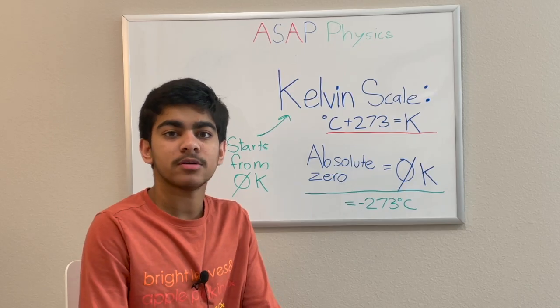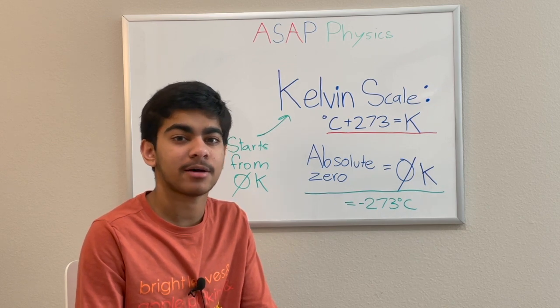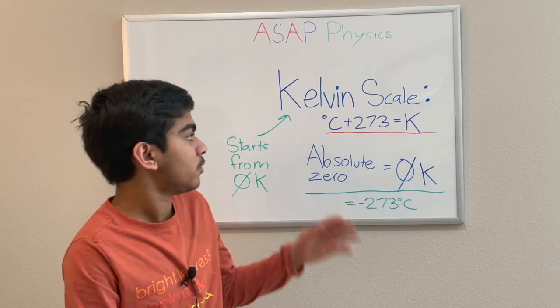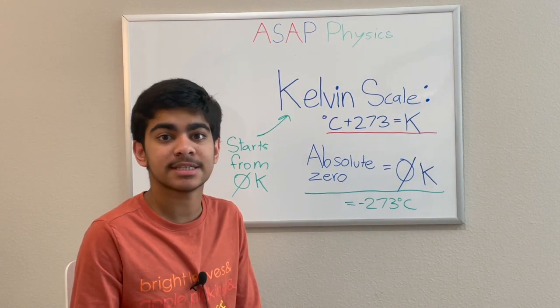The Kelvin scale is one of the most important scales used in thermodynamics, so it is really important to understand how the Kelvin scale works. In the Kelvin scale, if you want to find Kelvin, you just add 273 degrees from the Celsius temperature.